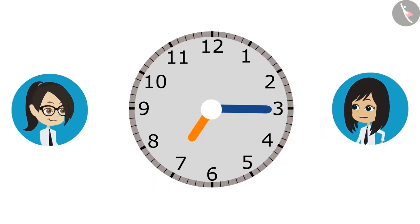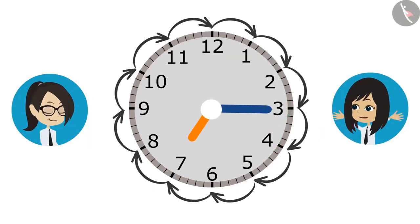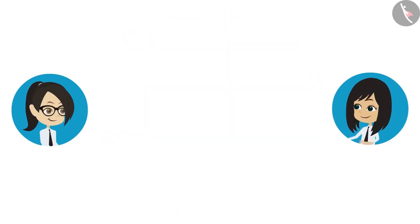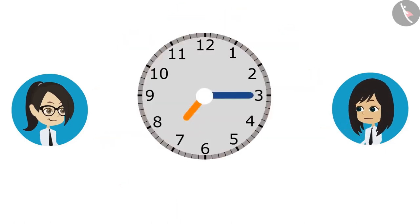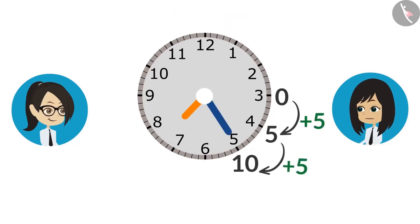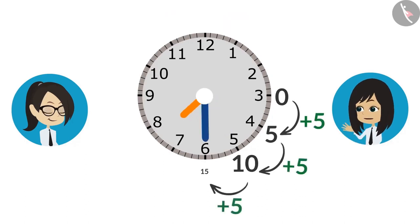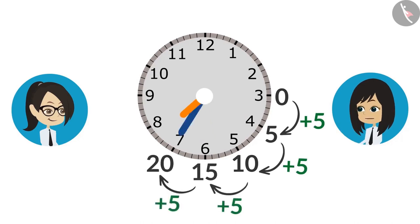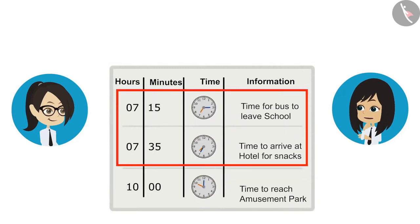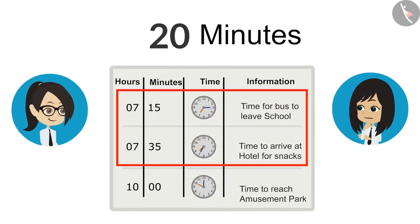While going from one number to another number, we keep adding 5. When the minute hand is at 3, we consider that time as 0. It takes 5 minutes to reach 4, and 10 minutes to reach 5. It takes 15 minutes to reach 6 and 20 minutes to reach 7. This means the bus takes 20 minutes from school to reach the hotel.